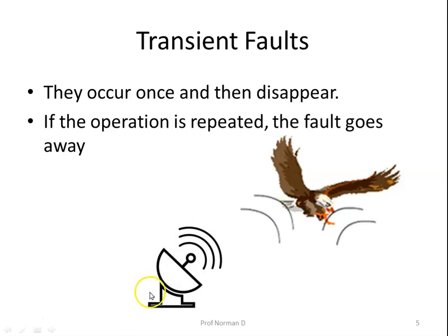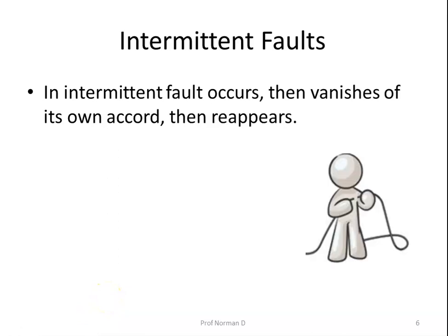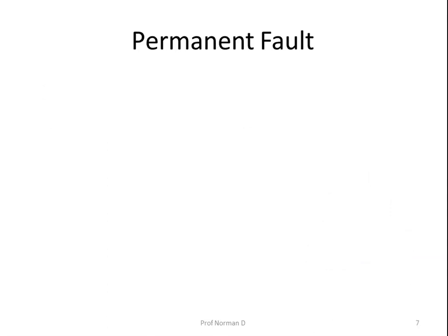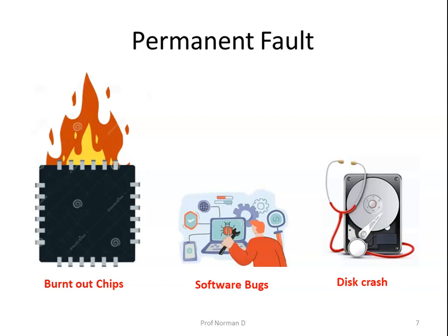If this transmission times out and is retried it would probably work the second time. An intermittent fault occurs and then vanishes on its own, then reappears and so on. For example, a loose contact on a connector will cause an intermittent fault. These faults cause a great deal of aggravation because they are difficult to diagnose. A permanent fault is one that continues to exist until the faulty component is repaired; for example, burnout chips, software bugs, and disk head crashes often cause permanent faults.